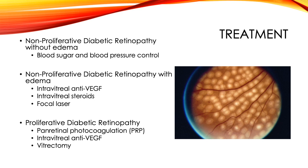Other treatments for macular edema include intravitreal steroids and focal laser. Proliferative diabetic retinopathy can be treated with pan-retinal photocoagulation, intravitreal anti-VEGF injections, and may even require vitrectomy for manifestations like vitreous hemorrhage, epiretinal membranes, and retinal detachments. Pan-retinal photocoagulation works by reducing metabolic oxygen demands of the retina and VEGF production, which reduces abnormal blood vessel proliferation. It also helps prevent tractional retinal detachments.